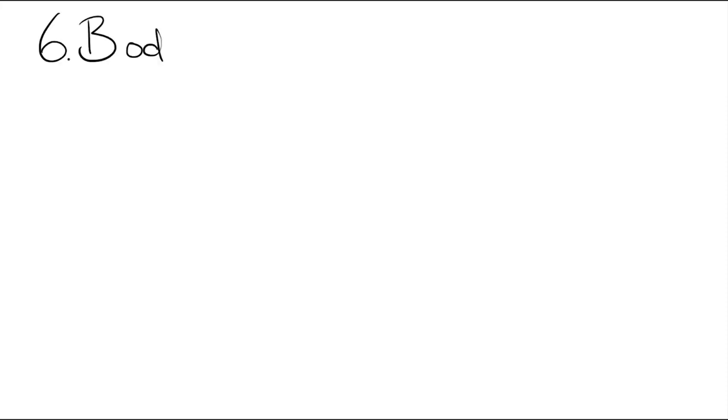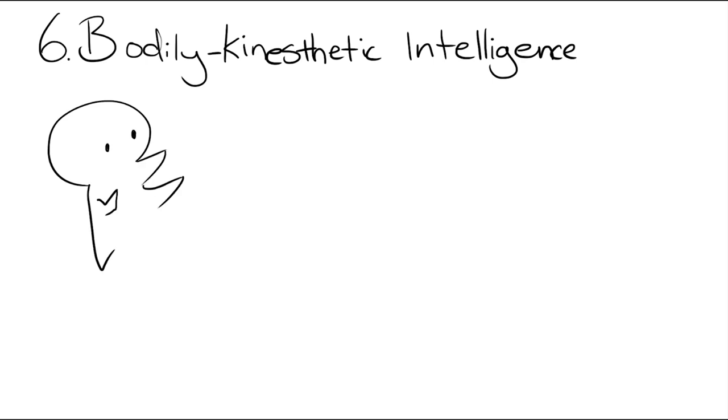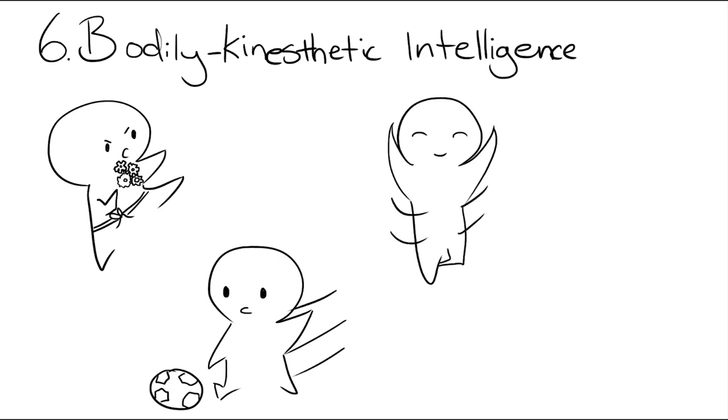Number six, bodily kinesthetic intelligence. People with this type of intelligence love movement. They have high body awareness and good motor skills. Because of that, they often excel in activities that involve body movement, such as sports and dance. They learn best by doing and are keen to figuring things out through experimentation.